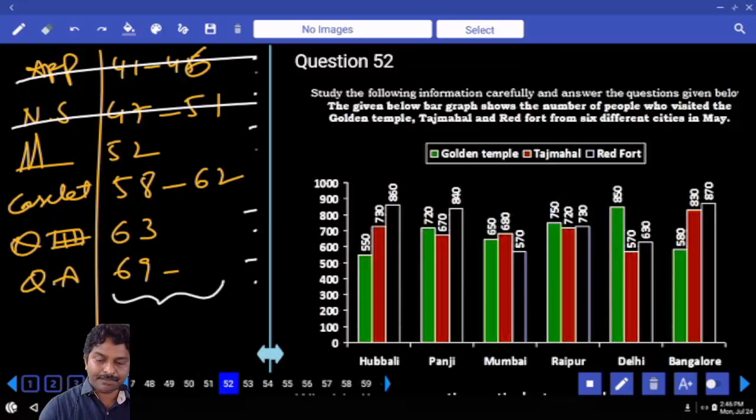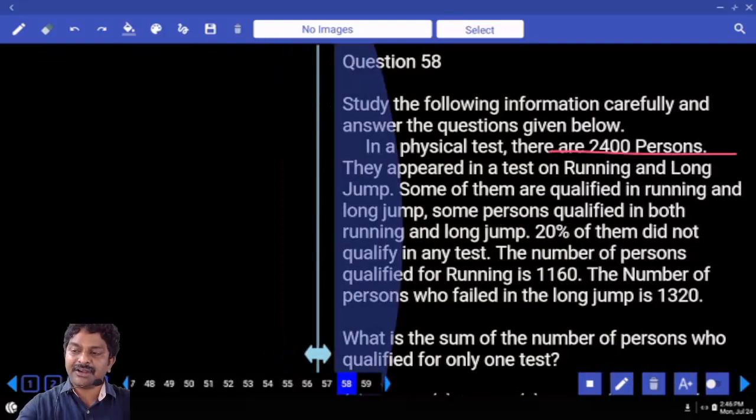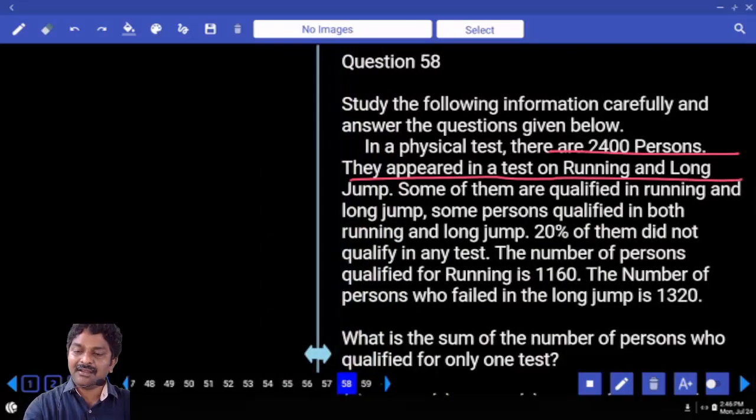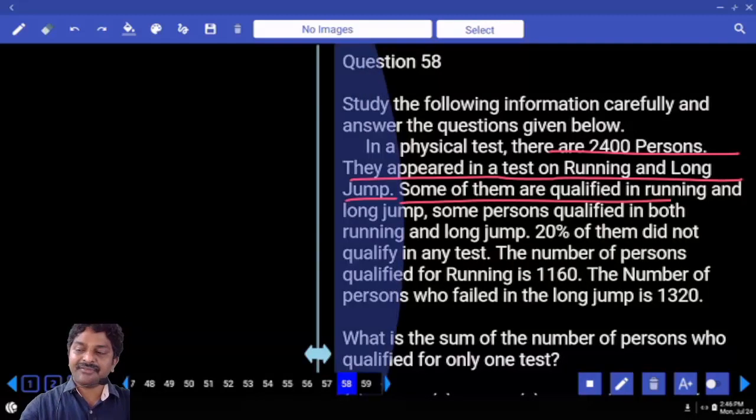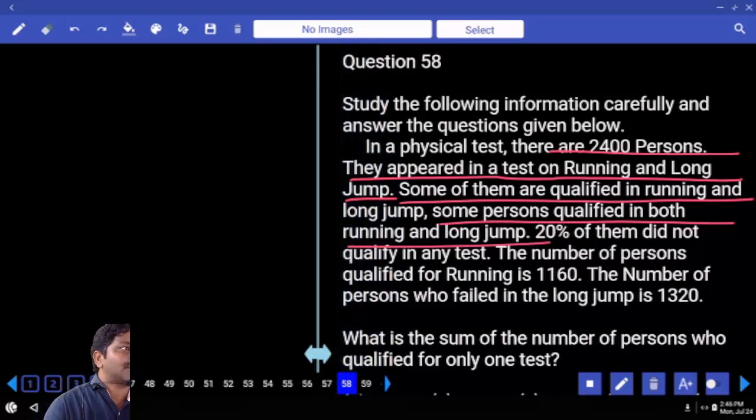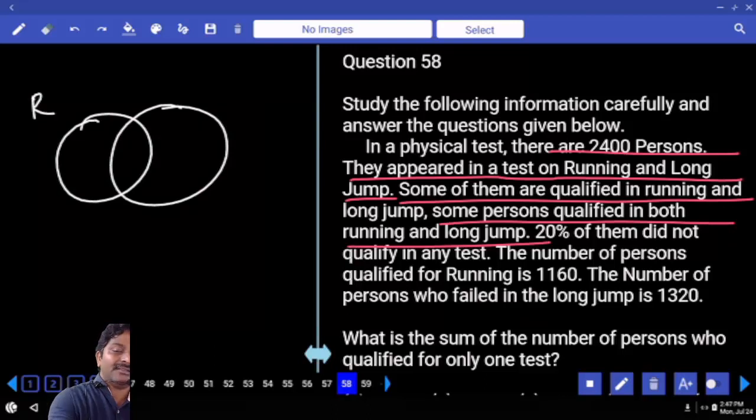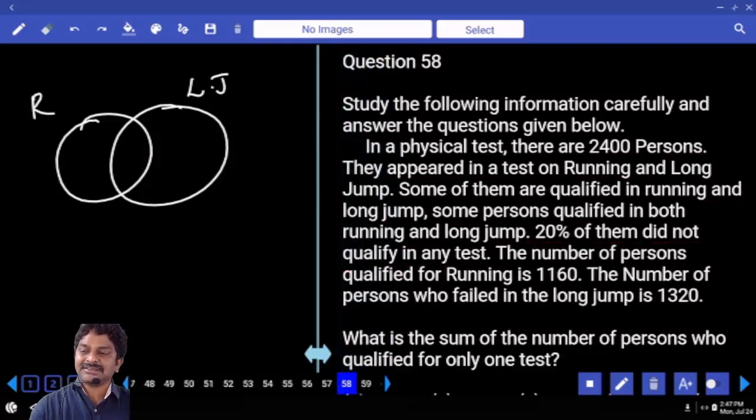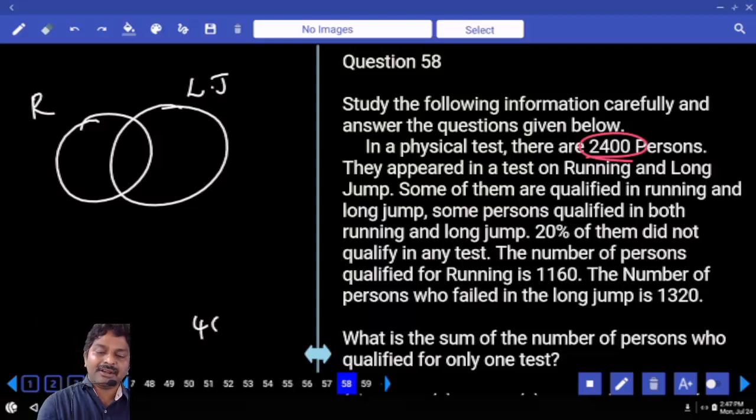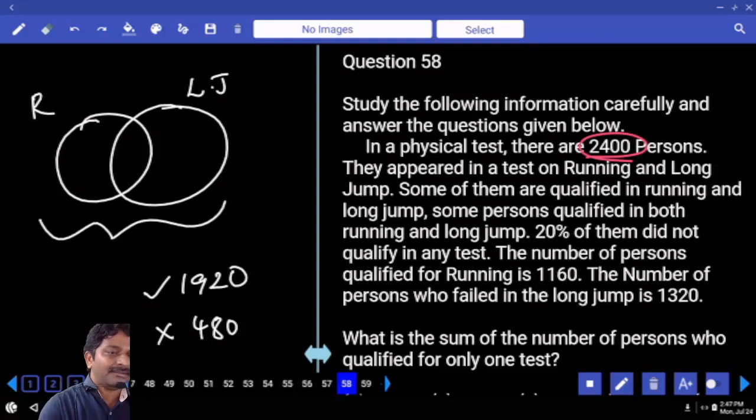Question 58 onwards. In a physical test, there are 2400 persons who appeared in a test on running and long jump. Some of them qualified in running and long jump, some qualified in both. What to use? Venn diagram. Both are there, one is running, the other one is long jump. 20% of them did not qualify in any test. Out of 2400, 480 did not qualify, that means 1920 are qualified. When you add all these values, that must equal 1920.